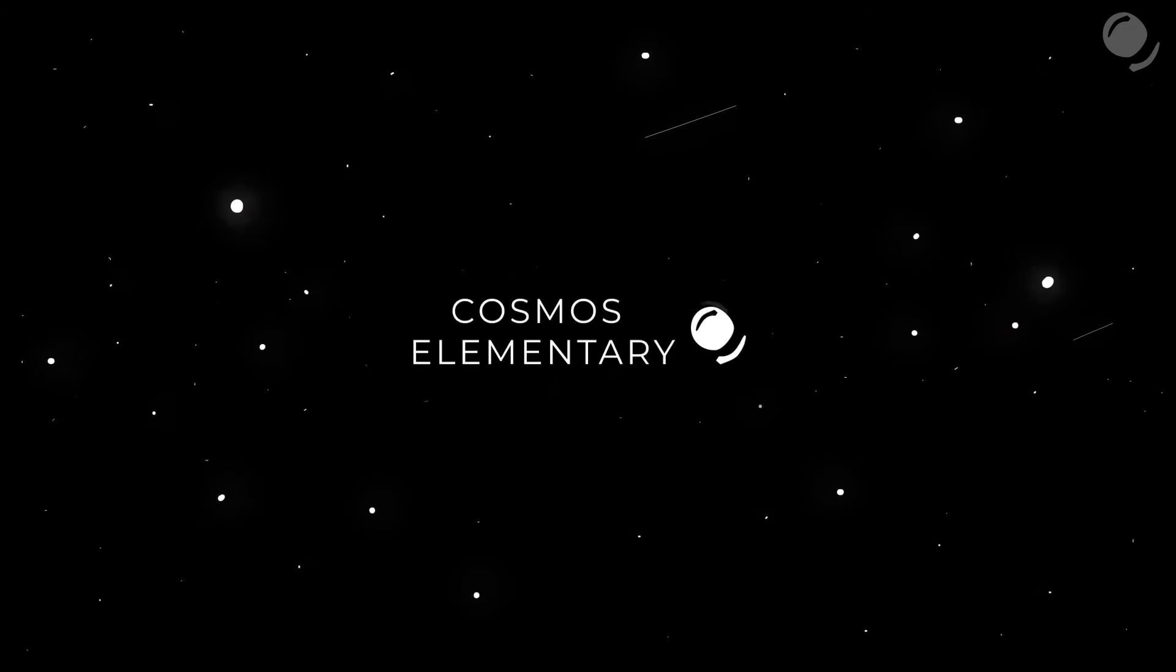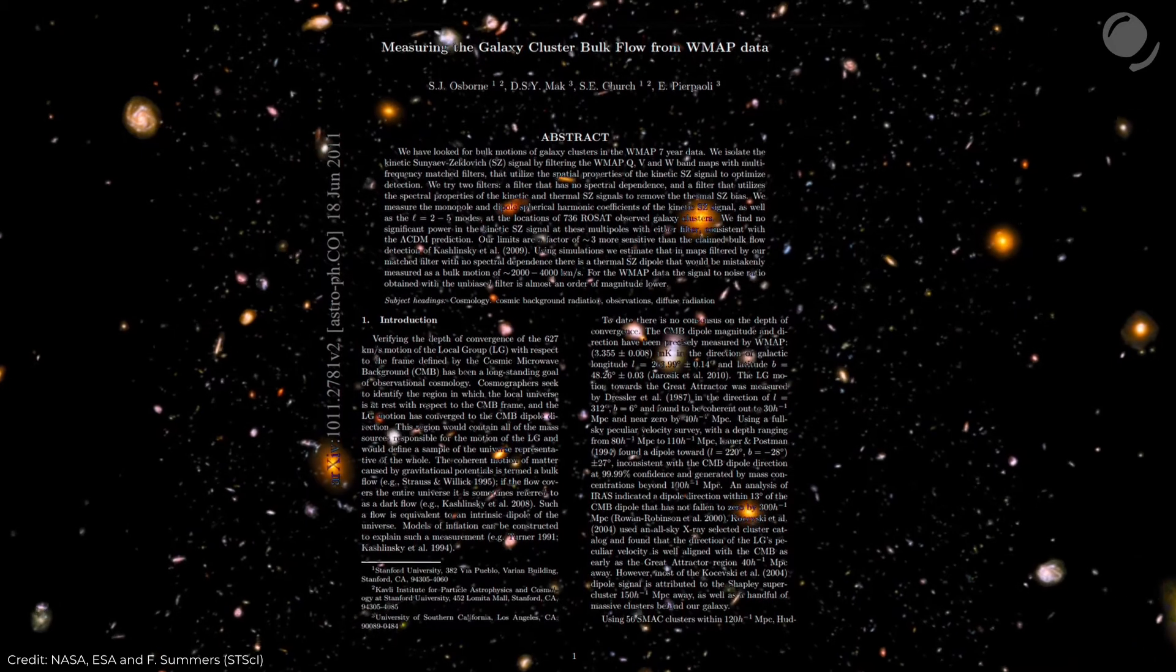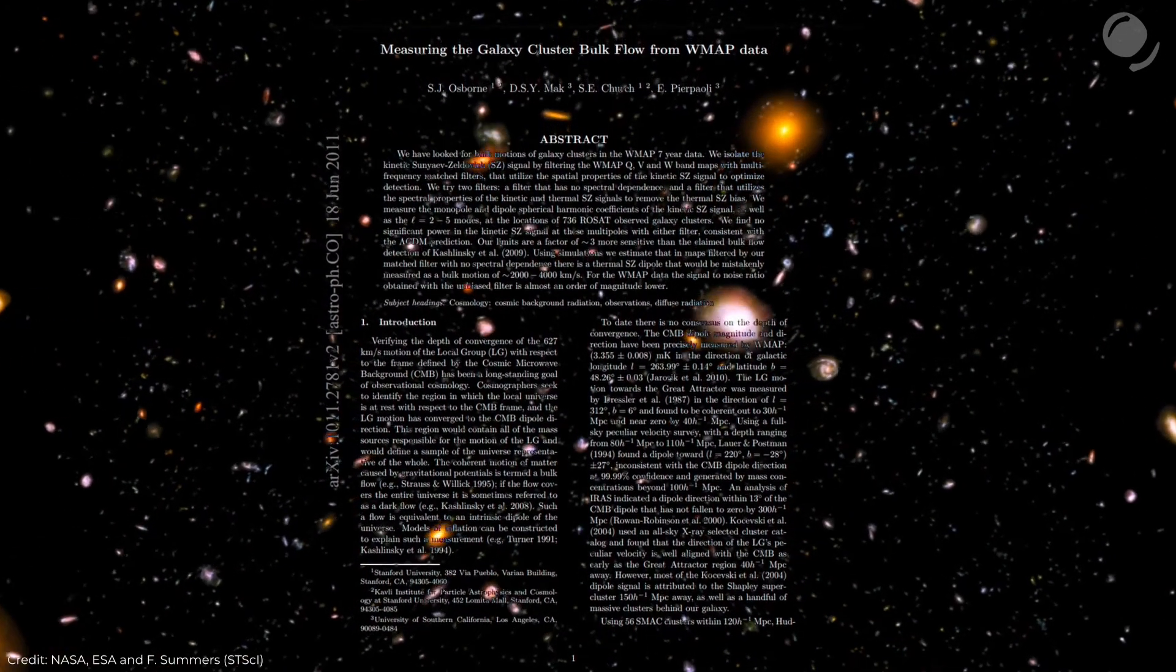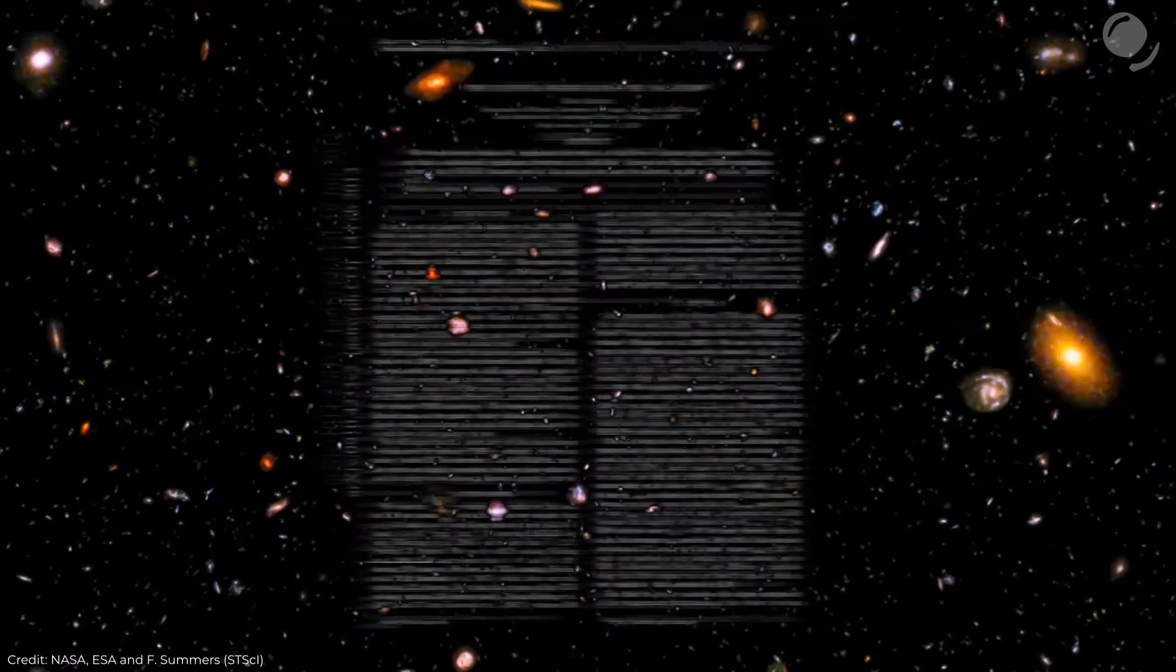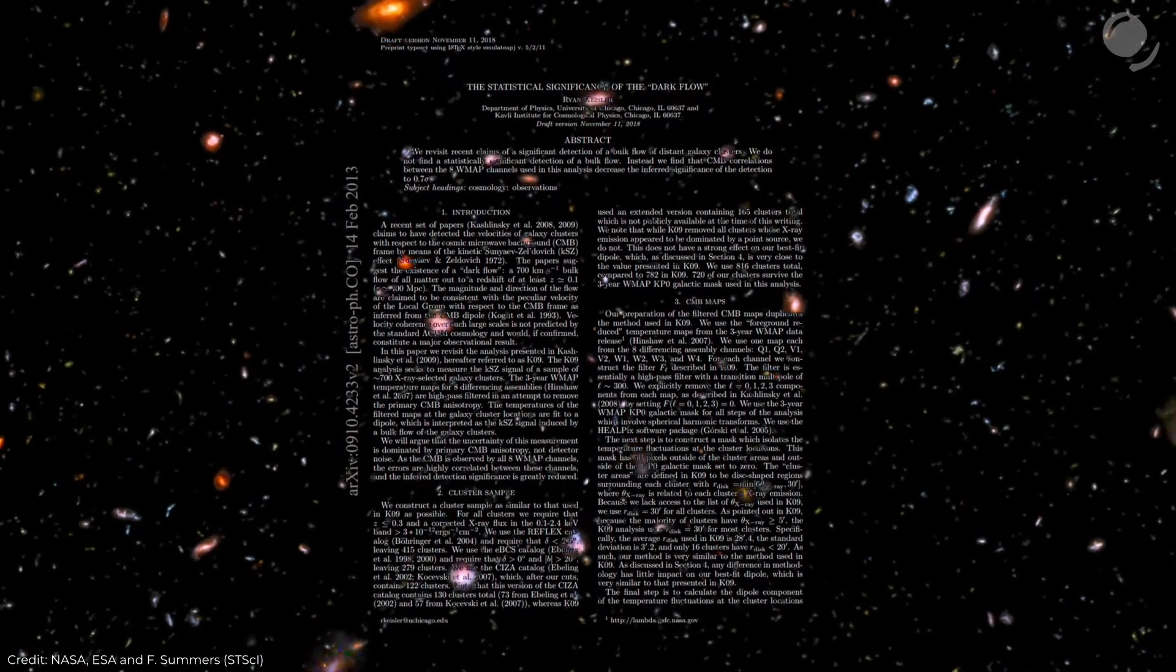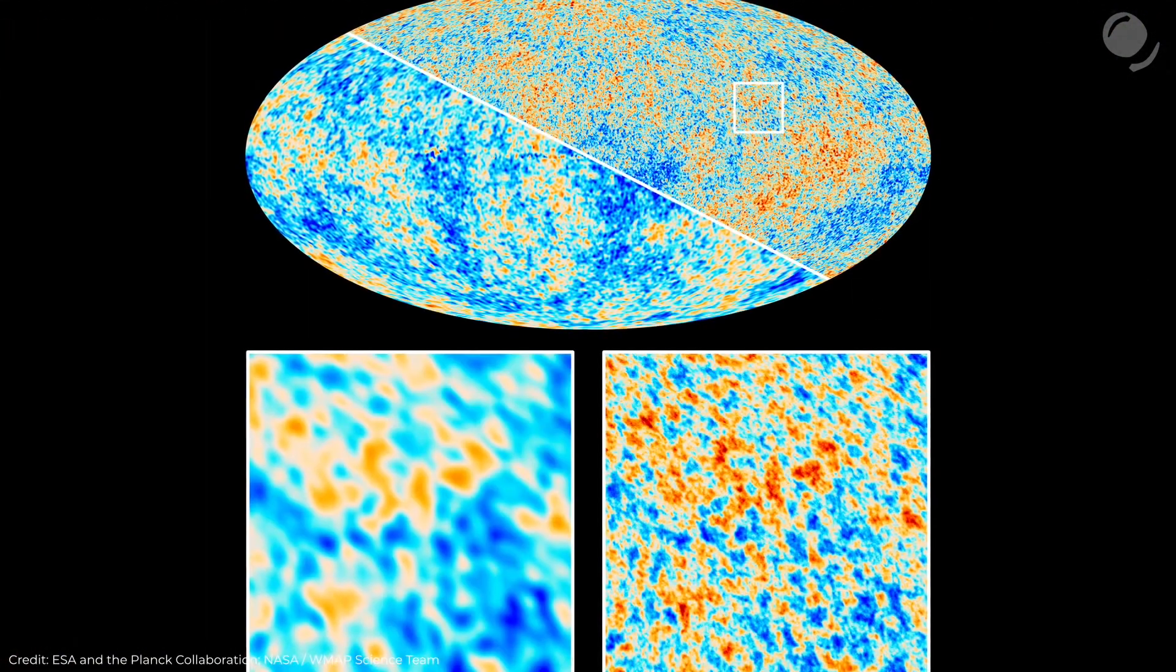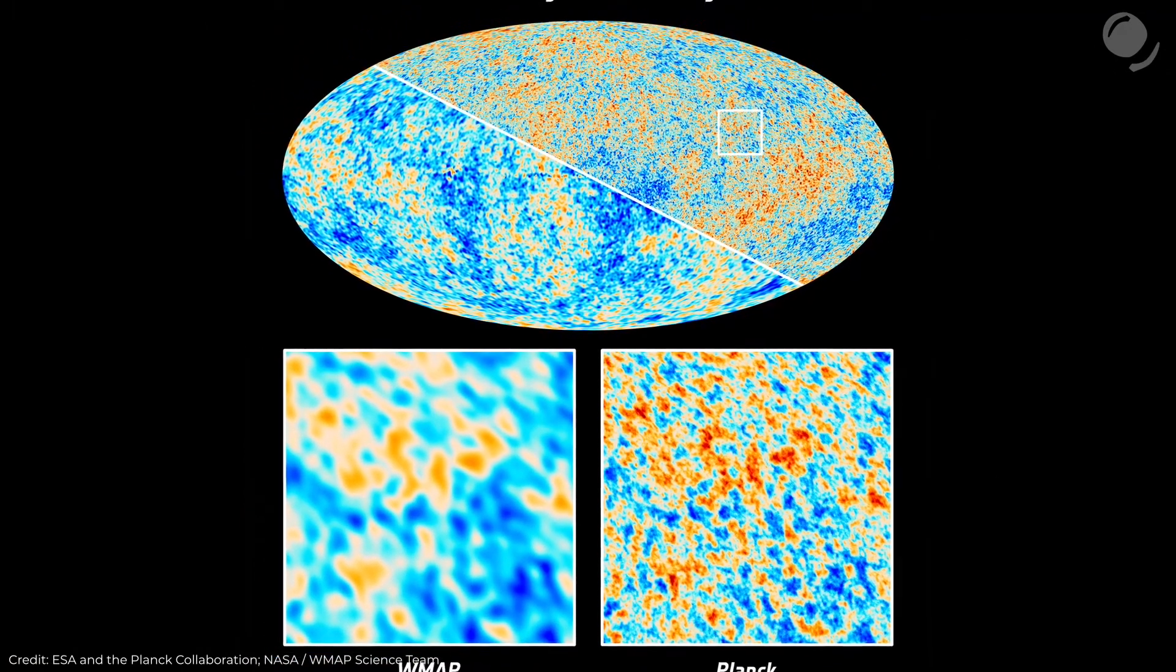But obviously not everyone agreed and not all of the studies confirmed the results. Different group of scientists used seven years of WMAP observations, used their own filters and concluded that there is no such large-scale flow. So basically according to them, Kashlinsky and his team are wrong. There is another paper from 2013 and here scientists didn't see the Dark Flow either.